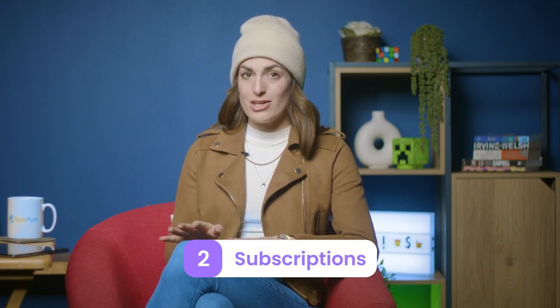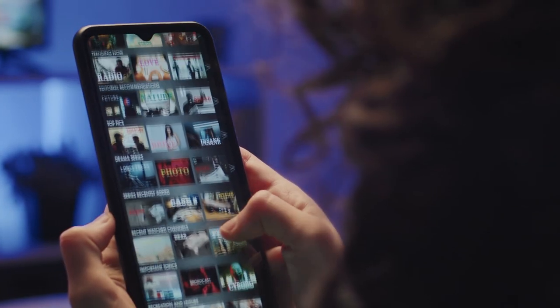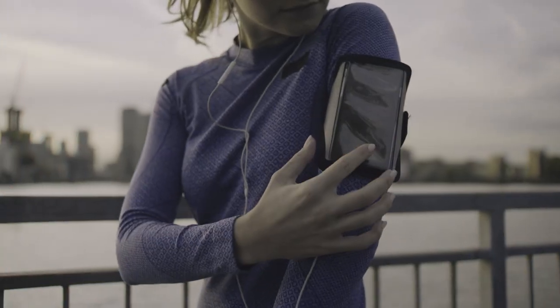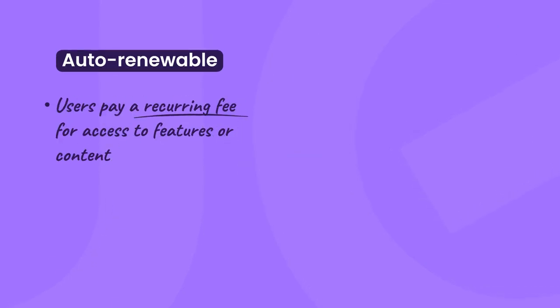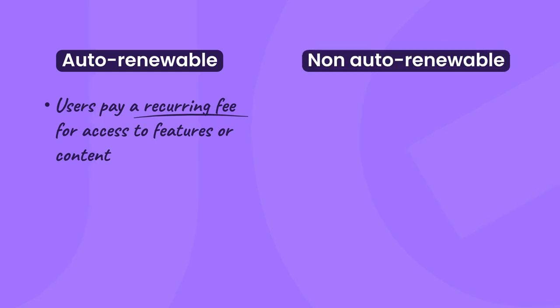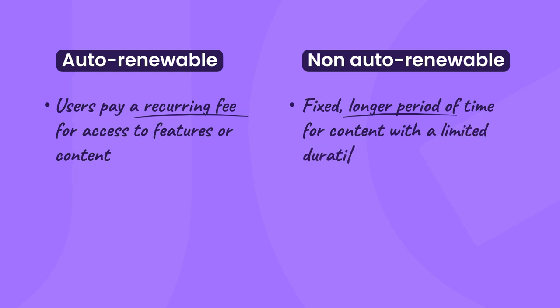Moving on to the second strategy: subscriptions. Believe it or not, users spend over $18 billion worldwide on app subscriptions. Subscription models can be a great way to generate a predictable cash flow. They work well for apps that offer valuable content regularly, like video streaming apps, dating apps, fitness apps, and news apps. There are two types: auto-renewable subscriptions, where users pay a recurring fee for access to features or content, and non-renewable subscriptions, which are usually for a fixed, longer period of time for content with a limited duration, like a season pass or a special offer on a magazine subscription.